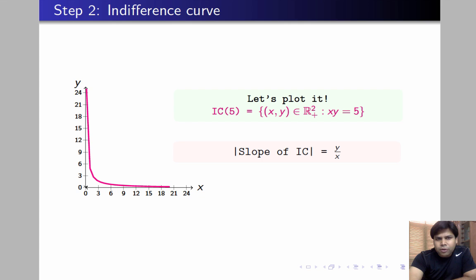The absolute value of the slope of the IC must fall with increase in x, because as x goes up, y goes down, so the numerator falls and the denominator rises. If that happens, the slope is going to fall, so you can also say that IC is going to be convex to the origin.